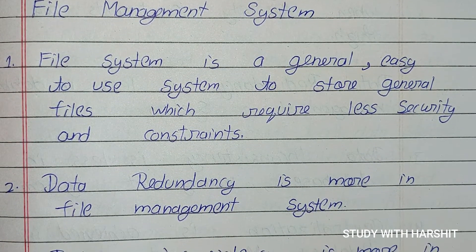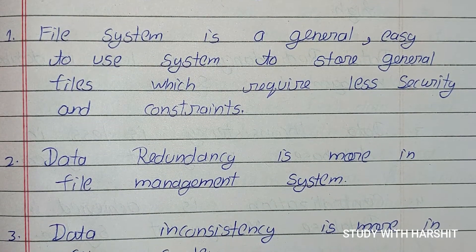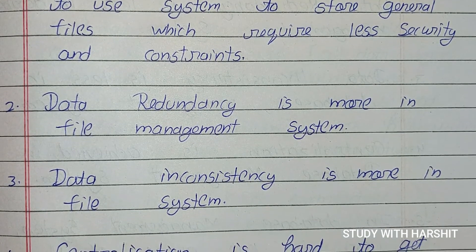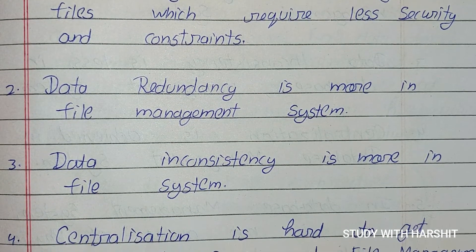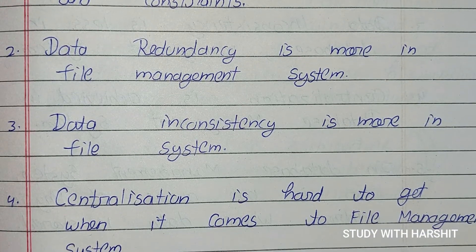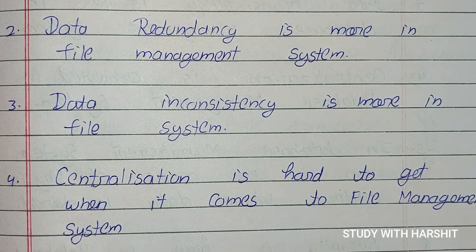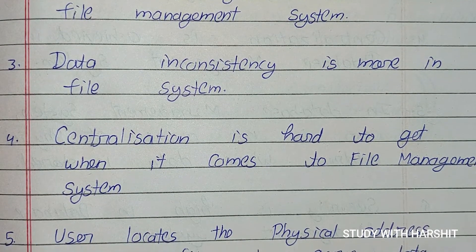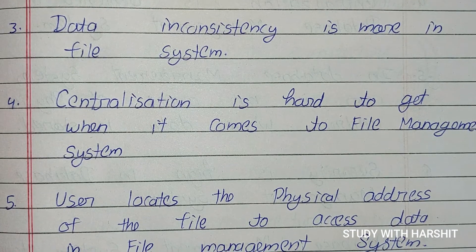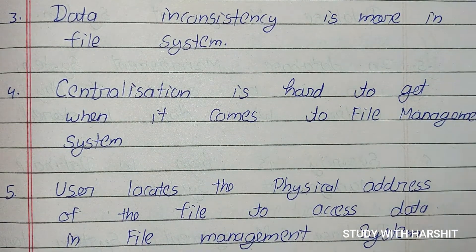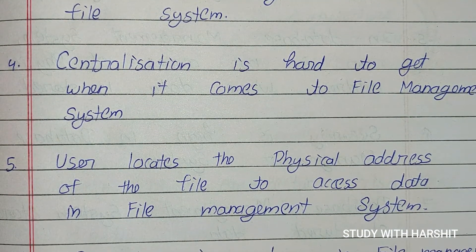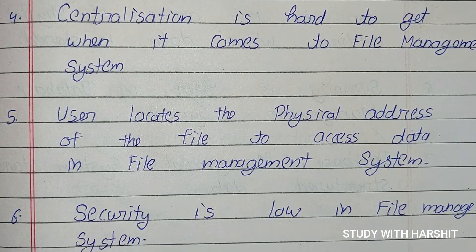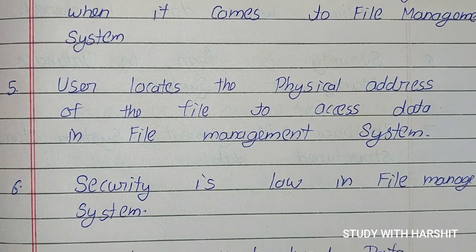Data redundancy is more in file management system. Data inconsistency is more in file system. Centralization is hard to get in file management system. The user locates the physical address of the file to access data in file management system. Security is low in file management system.